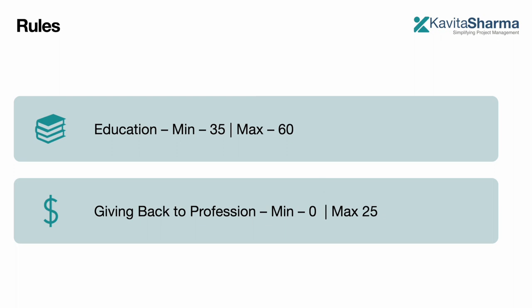The PDUs are divided into education and giving back to the profession. Giving back: minimum is zero and maximum is 25. In education, minimum is 35 — you need to spend time to learn things — and maximum is 60. For CAPM, it changes: minimum is 8 and maximum is 15.